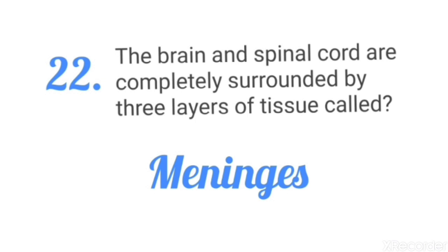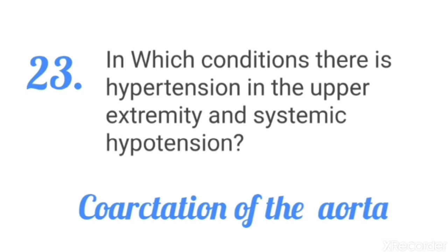In which condition is there hypertension in the upper extremity and systemic hypotension? The answer is coarctation of the aorta.